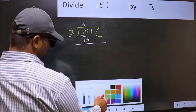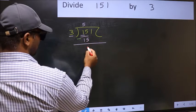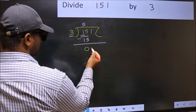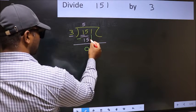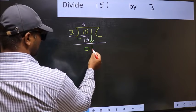Now, we should subtract. 15 minus 15, 0. After this, you should bring down the beside number. So, 1 down.